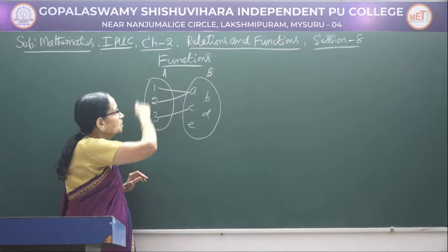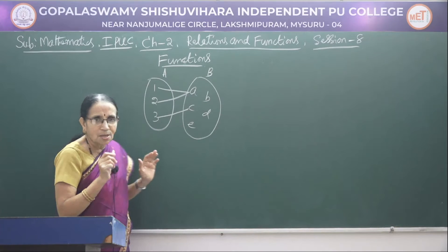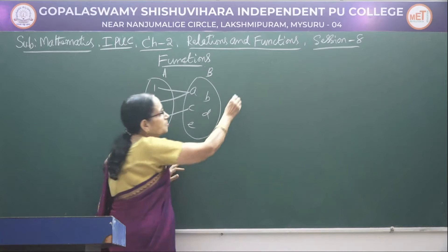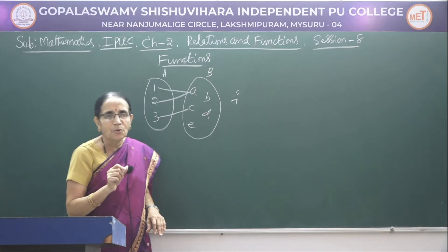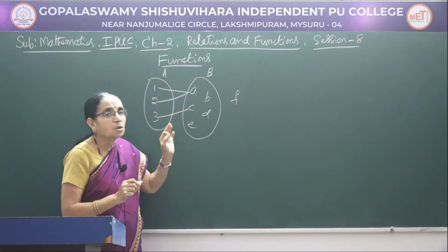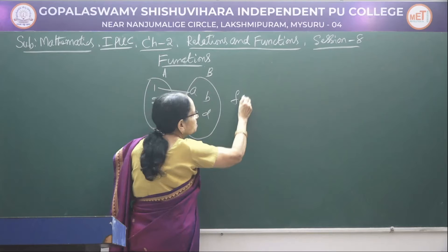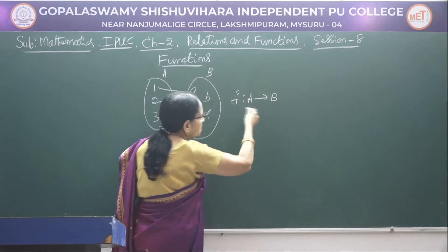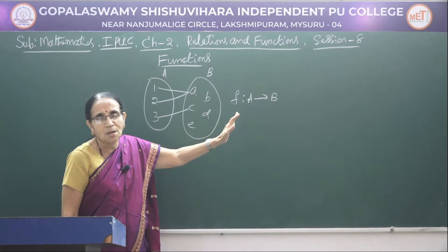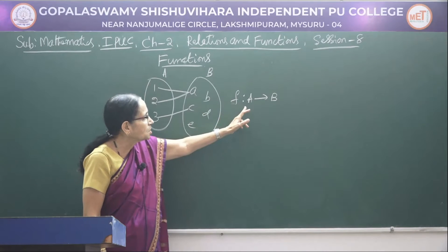Another thing you observe: all the elements belonging to the first set have been associated — no element is left out. So the definition is: a function from A to B — let A and B be two non-empty sets. A function F from A to B is a rule which associates each and every element of the first set A with the unique element of the second set B. We denote it as F: A → B, and we read it as 'F is a function from A to B.'